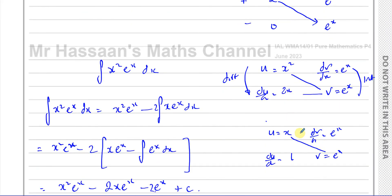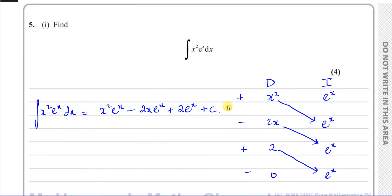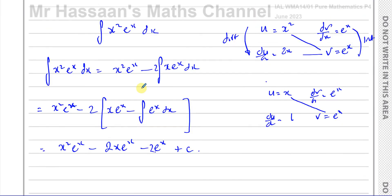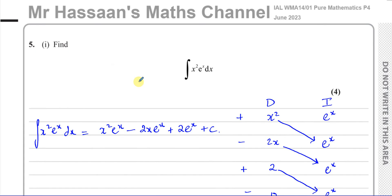We did exactly the same things, except the DI method is just way easier — just writing the table down. I personally find this way extremely easy and a much better way of dealing with this type of question. The next part of the question is integration by substitution, so I'll save that as a separate video to keep the integration playlist separated. If you'd like to see part two, the playlist will appear in the top corner. You can also watch the integration by parts and DI method playlists. Thank you for watching and see you soon.